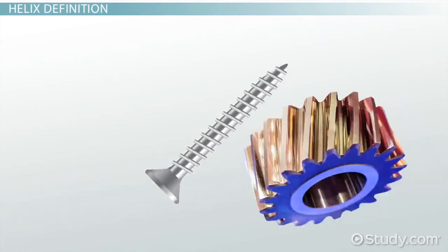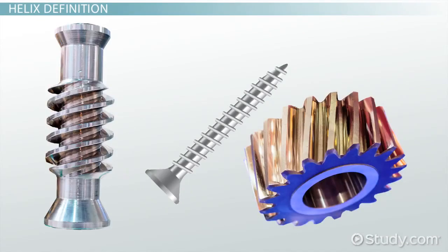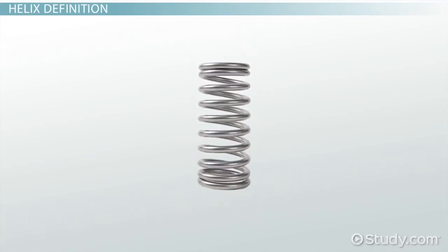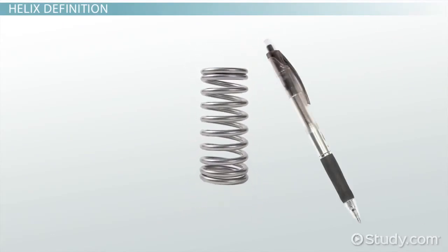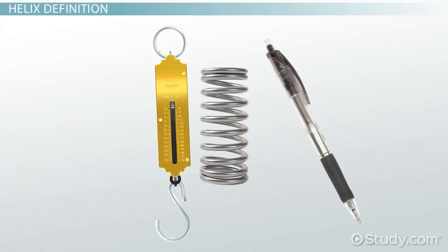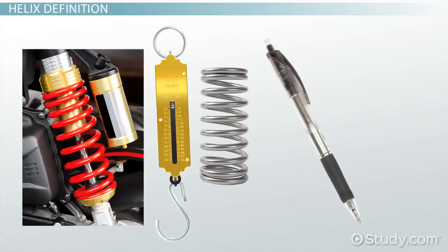Screws, helical gears, and worm gears are commonly used mechanical components which have helical threads. Other places you might see helical shapes are in springs, like the one in your clickable ballpoint pen, or in a weighing scale, or the suspension in your bicycle or car.